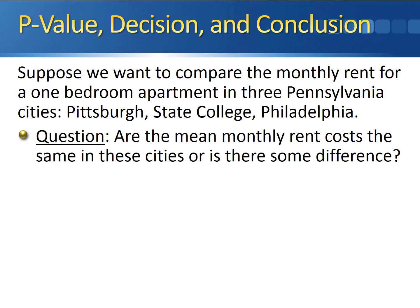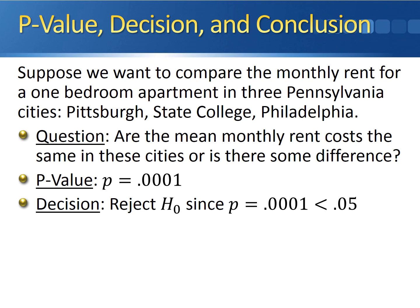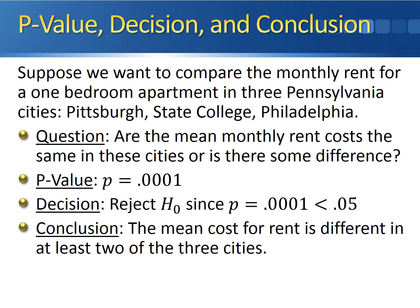To finish off this hypothesis test, we calculate the p-value, make a decision, and come to a conclusion. Using Excel, the p-value for the ANOVA test is 0.0001. Since we do ANOVA tests at the 5% level of significance, we reject the null hypothesis because our p-value is less than 0.05. We conclude that the mean cost for rent is different in at least two of the three cities.